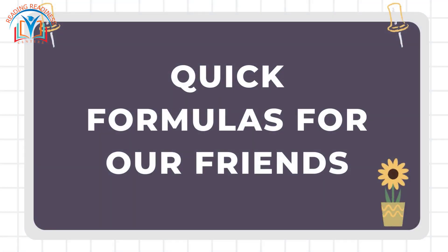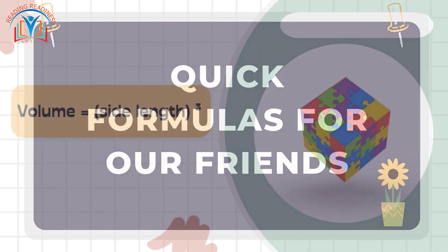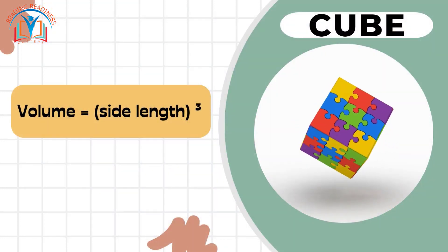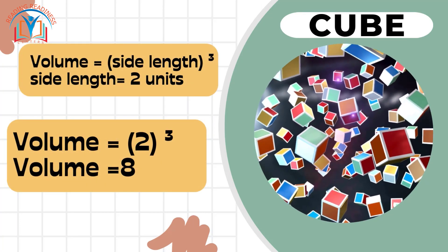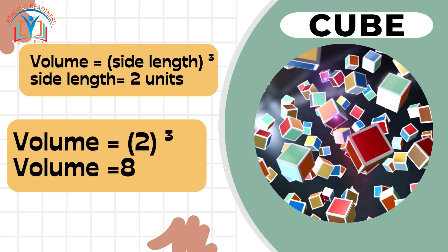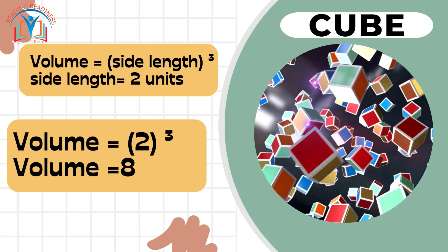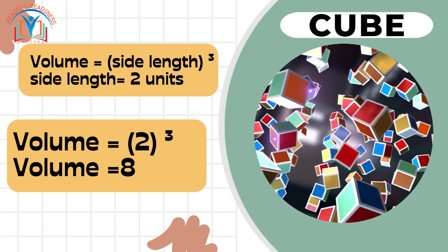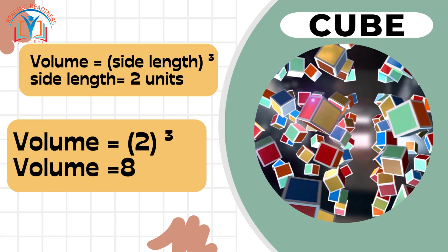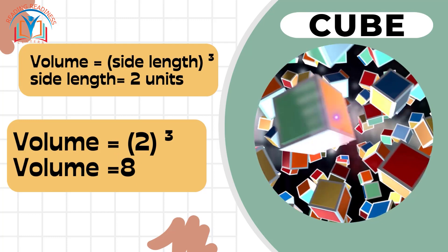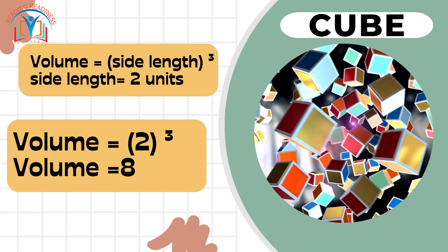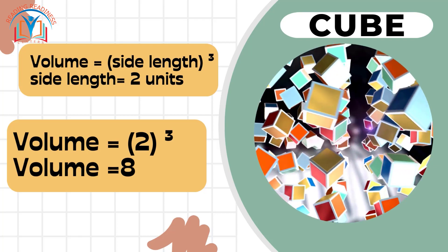Quick formulas for our friends. Cubes: volume equals side length cubed. Let's take an example - the side length of the cube is 2 units. Replace the side length in the formula with the actual length, which is 2 units. The calculation results in 8. So, the total volume of the cube with sides measuring 2 units is 8 cubic units.